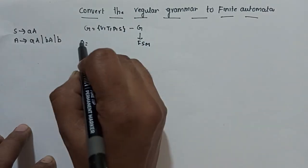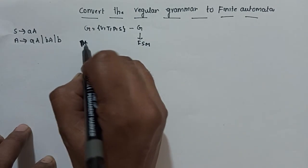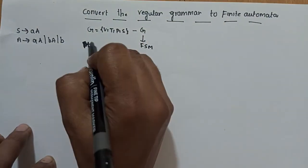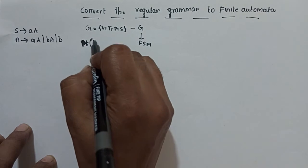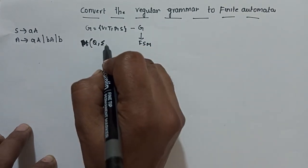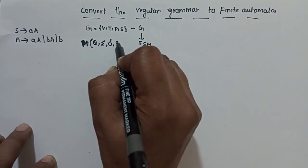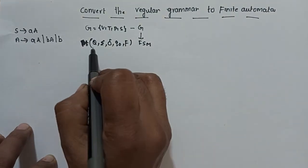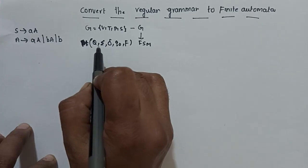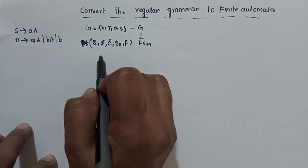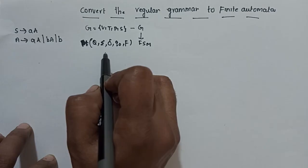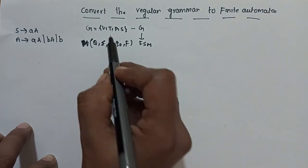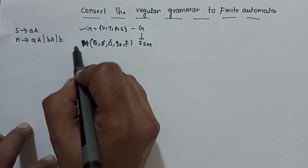Finite automata M is defined as 5-tuples: Q, Sigma, delta, q-naught, and F. Q is the total number of states, Sigma is the set of input symbols, delta is the transition function, q-naught is the initial state, and F is the final state.